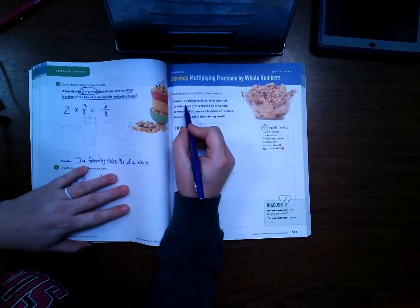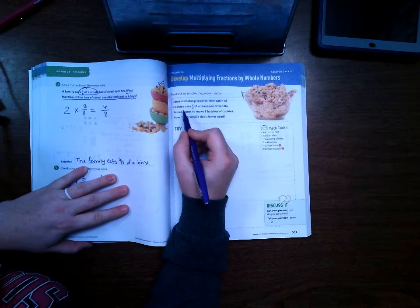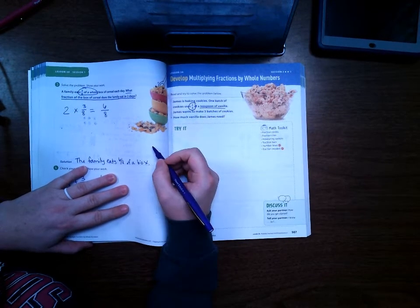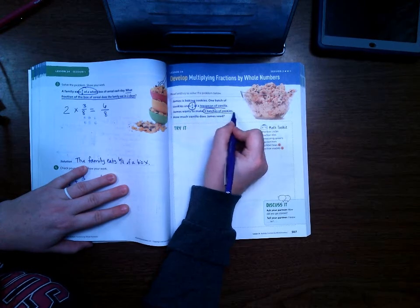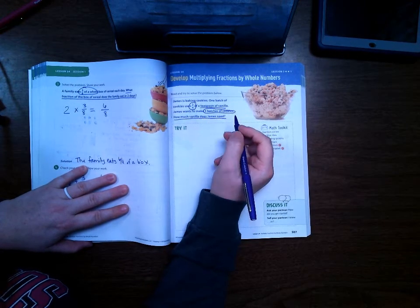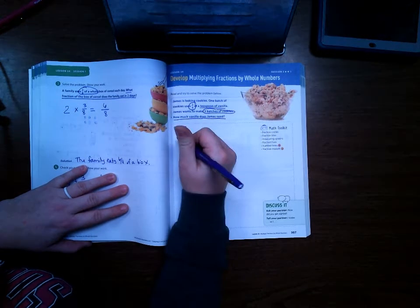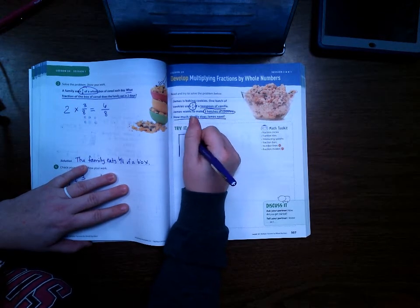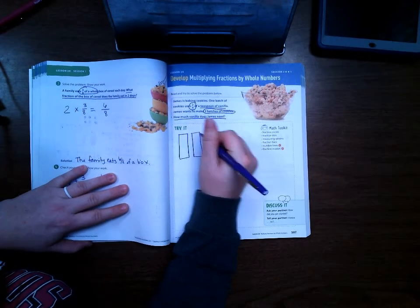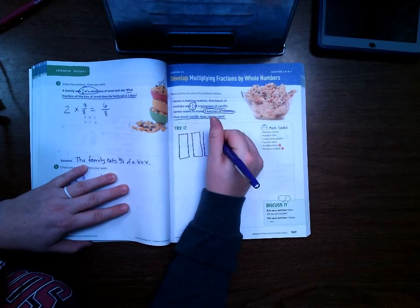James is baking cookies. One batch of cookies uses two-fourths of a teaspoon of vanilla. James wants to make three batches of cookies. How much vanilla does James need? Okay, so we're going to do this using a model, but at this point you might be comfortable with just going ahead and doing the multiplication and that's okay too.